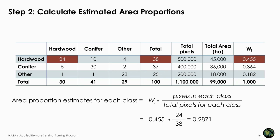Since the number of pixels per class is disproportionate relative to the area of the class, it is necessary to estimate the area proportions for each cell in the error matrix. We use the area proportion from the land cover map combined with correctly classified pixel information. To do this, divide the total correctly classified pixels for a class by the total classified pixels for that class and multiply by W sub I. For hardwood, divide 24 by 38 and multiply by 0.455 to get 0.2871.